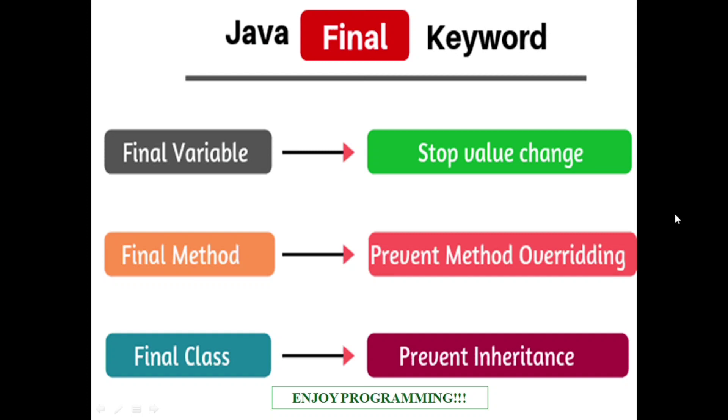If we declare a variable as a final variable, then we can create a named constraint. We cannot change the value further. If we define a method as a final method, then we cannot do overriding. Method overriding is not possible.